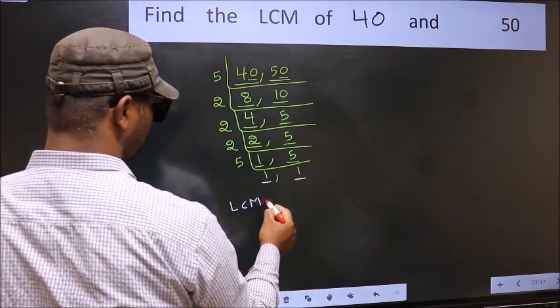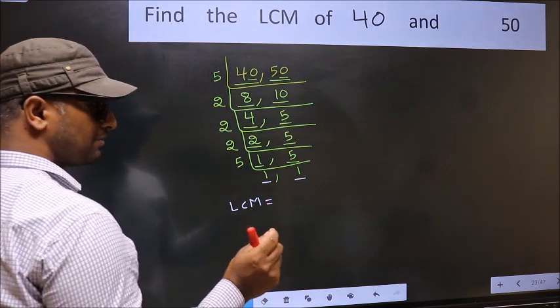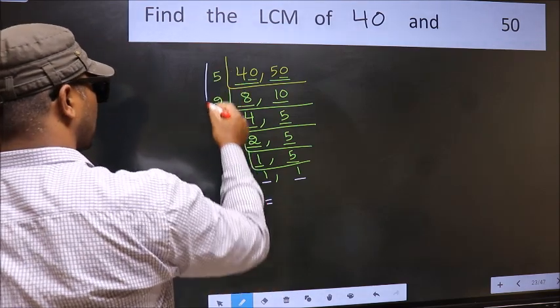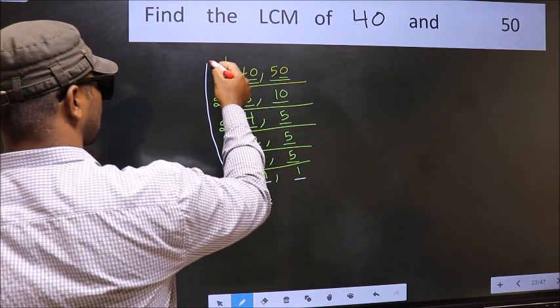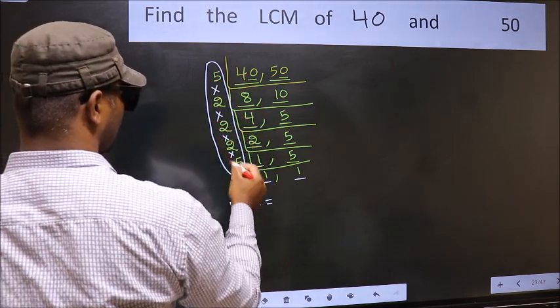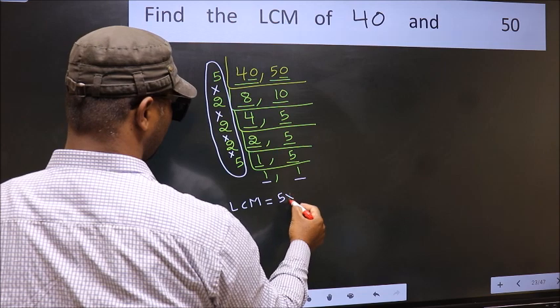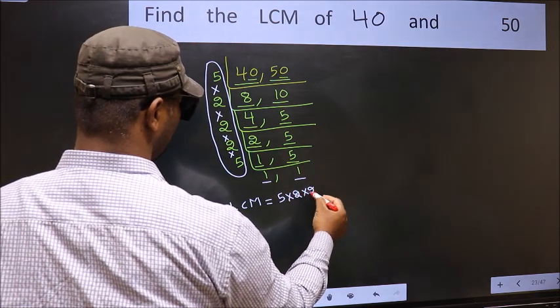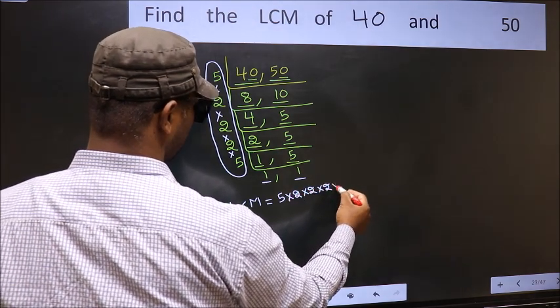So our LCM is the product of these numbers. That is 5 into 2 into 2 into 2 into 5.